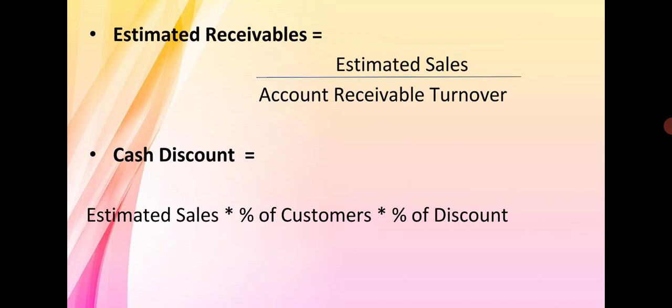The next formula is cash discount. Cash discount is equal to estimated sales increase multiplied by percentage of customers multiplied by the rate of discount that the organization allows at the time of cash purchase. On the basis of this formula, we can estimate how much cash discount the company will allow to their customers. If the amount of cash discount is increasing, it is a kind of expenditure for the organization, so the company tries to reduce the rate of discount on cash purchases.